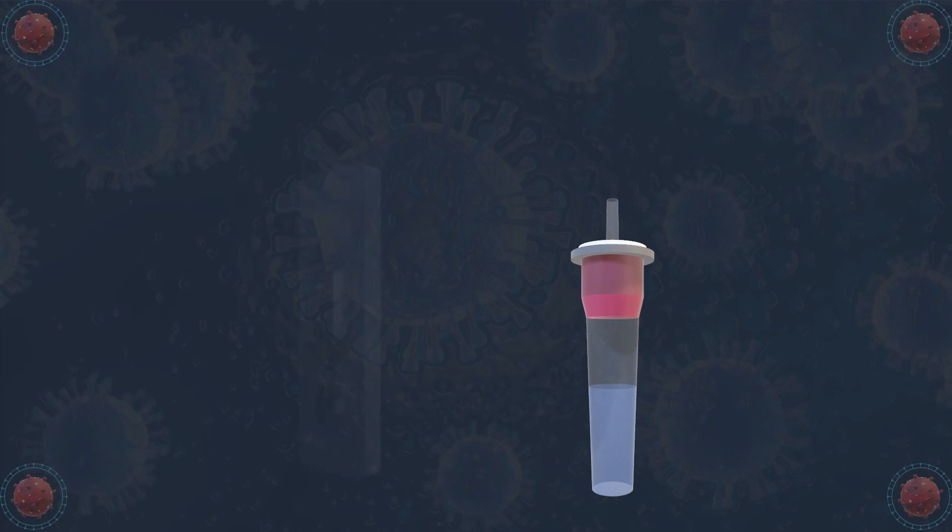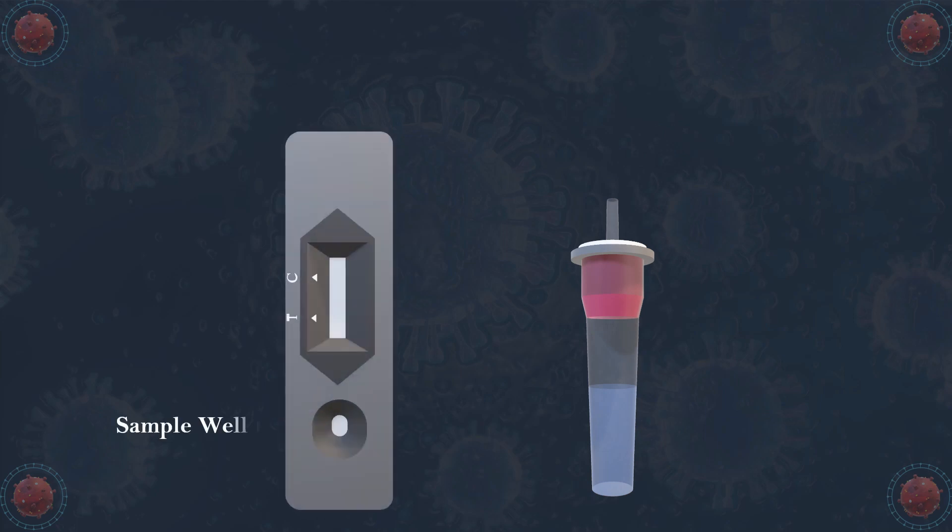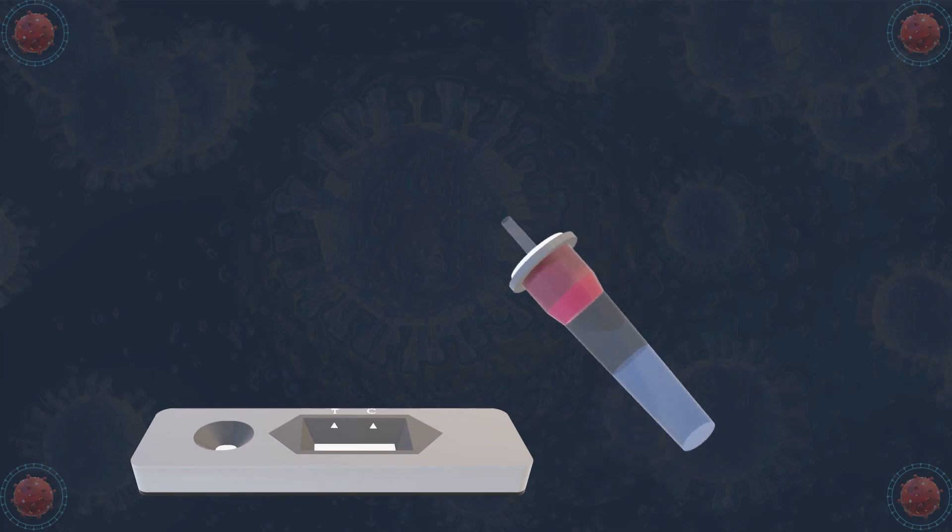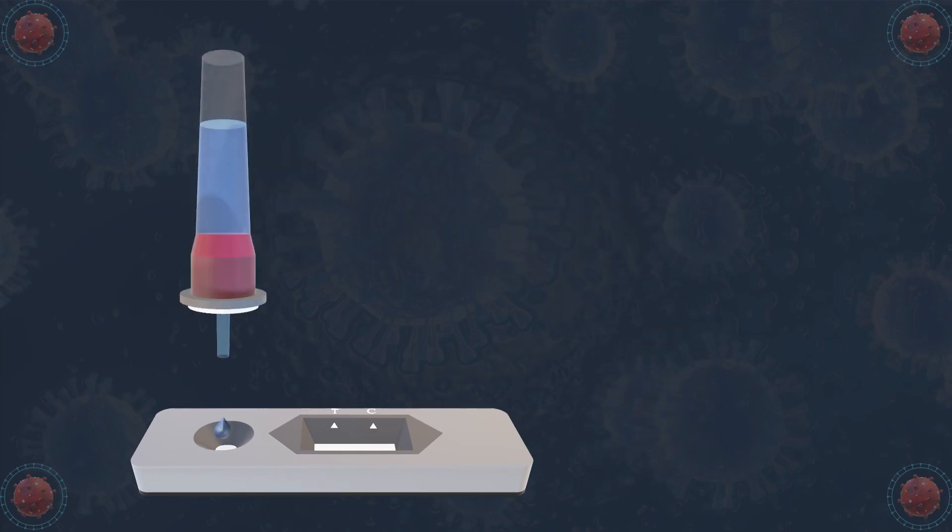The rapid antigen test is performed by using a cassette that contains a sample well, a test line, and a control line. The cassette is placed on a flat surface. Three drops of extracted sample are applied into the sample well, and the cassette is incubated for 10 minutes.